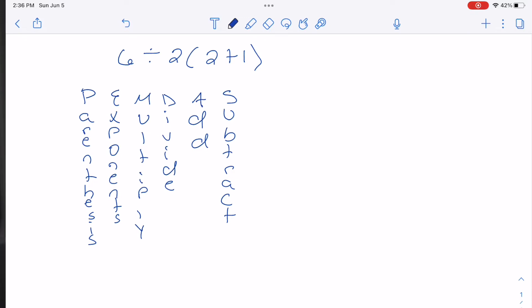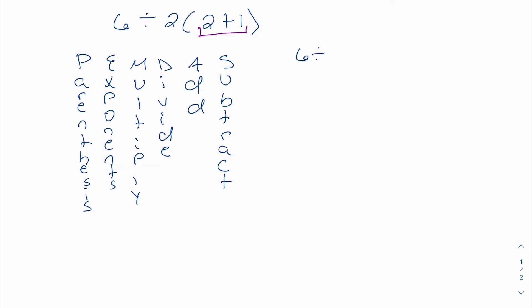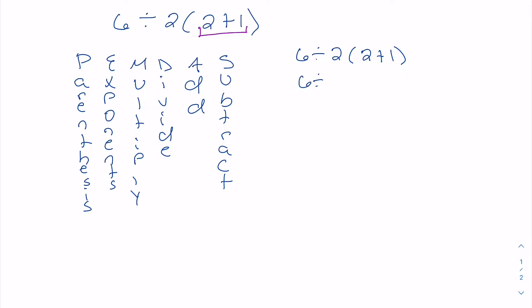The first thing is we look for parentheses. Here we've got parentheses around 2 plus 1, and when we say parentheses it means everything inside — not outside. So rewriting this, we'll have 6 divided by 2 times, and then 2 plus 1 is 3. Addition is normally at the end, but since it's inside the parentheses, we do everything in there first. So in purple, we get 3.